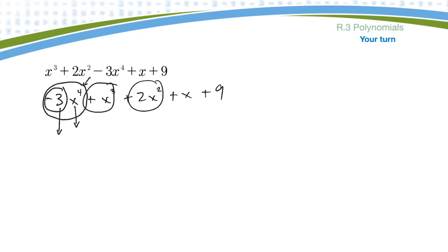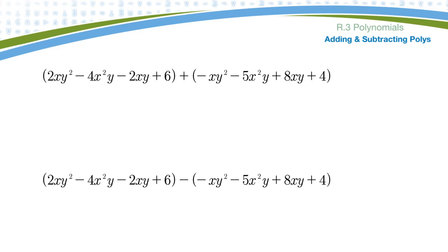Okay, and then here's a term, there's a term, there's a term, and there's a term. Okay, so now that we've seen how to identify them, how to order them, now we need to add and subtract them. When we add and subtract polynomials, we can only add or subtract like terms.